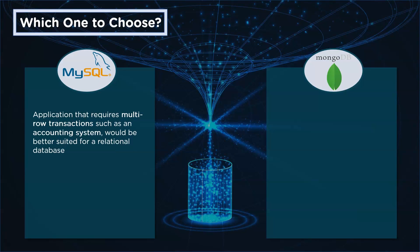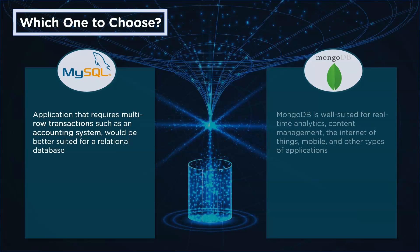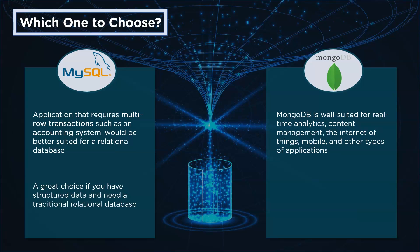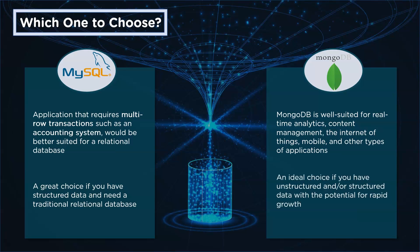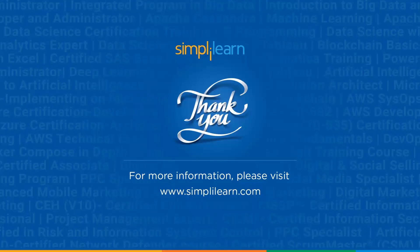So which one should you choose? If your application requires multi-row transactions, like an accounting system, then a relational database would be more ideal. MongoDB is more suitable for real-time analytics, content management, Internet of Things, and mobile applications. MySQL is a great choice if you have structured data and need a traditional relational database, while MongoDB is ideal if you have an unstructured set of data.